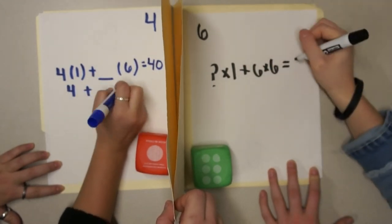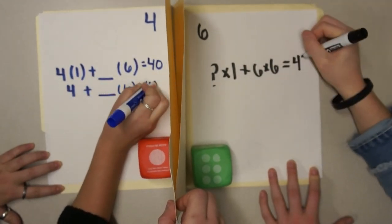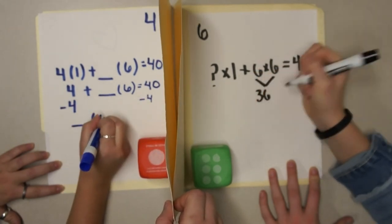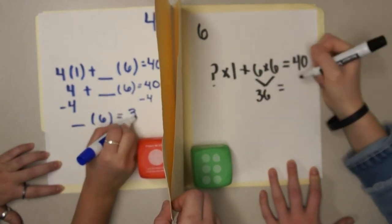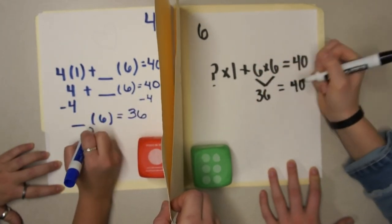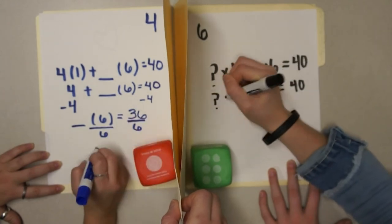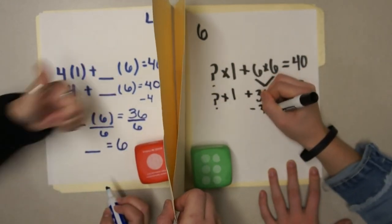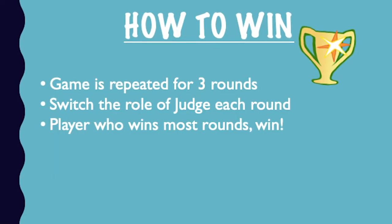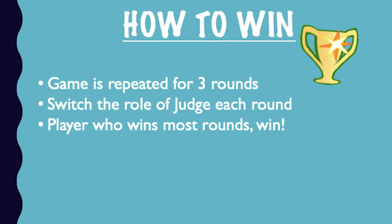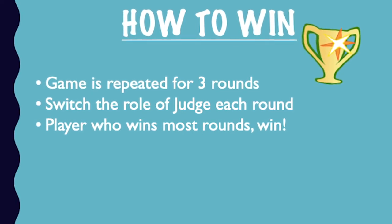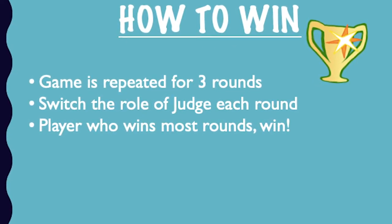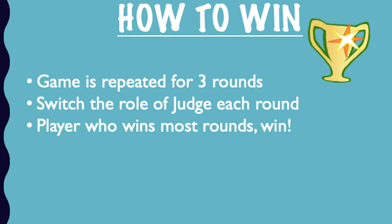Each player then solves for the opponent's mystery number. Player one solved the expression correctly first, meaning player one won that round. This process is repeated for a total of three rounds while switching the role of the judge each round. The player who wins the most rounds wins the game.